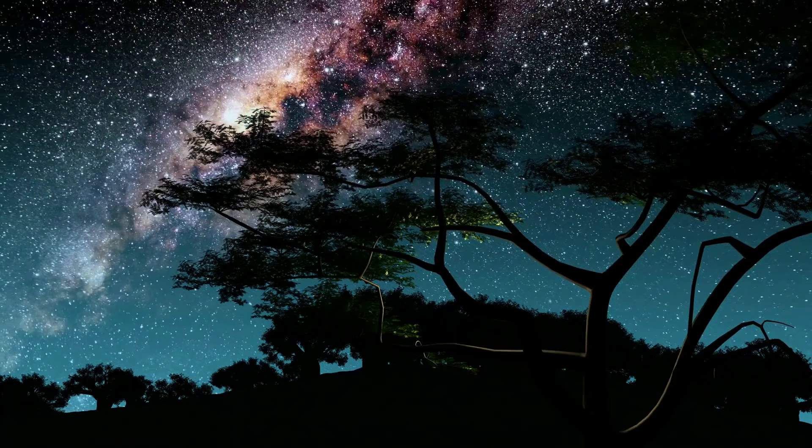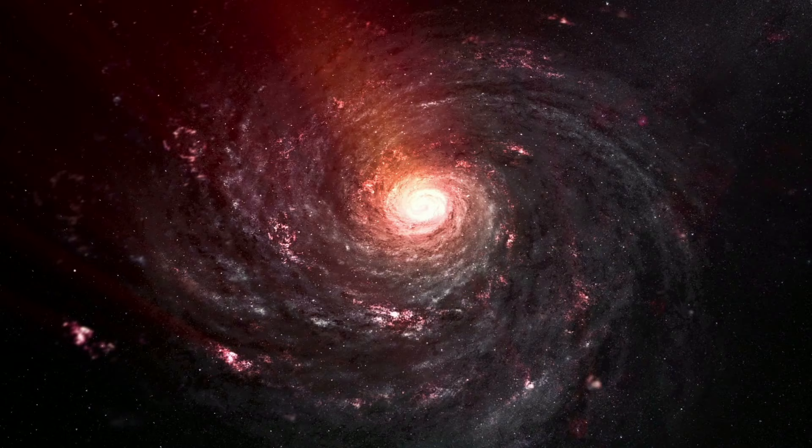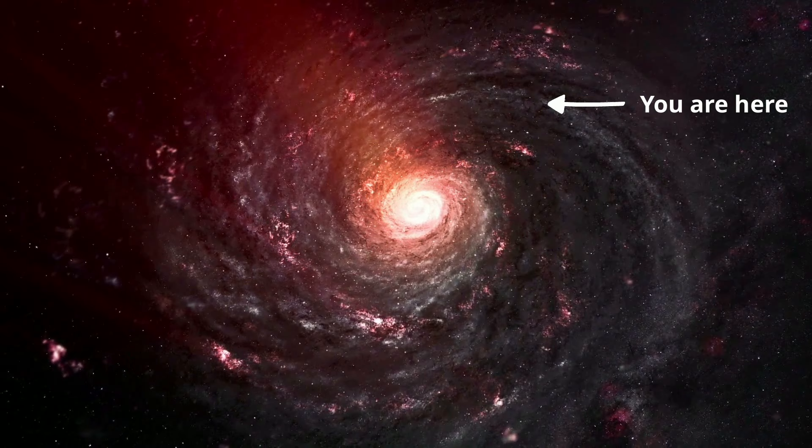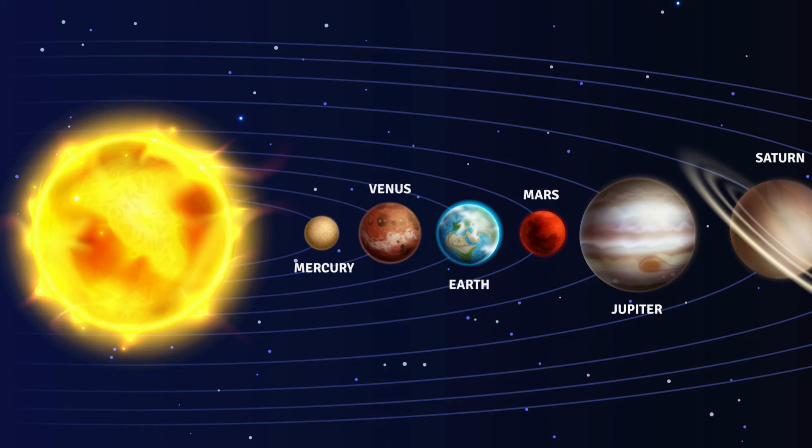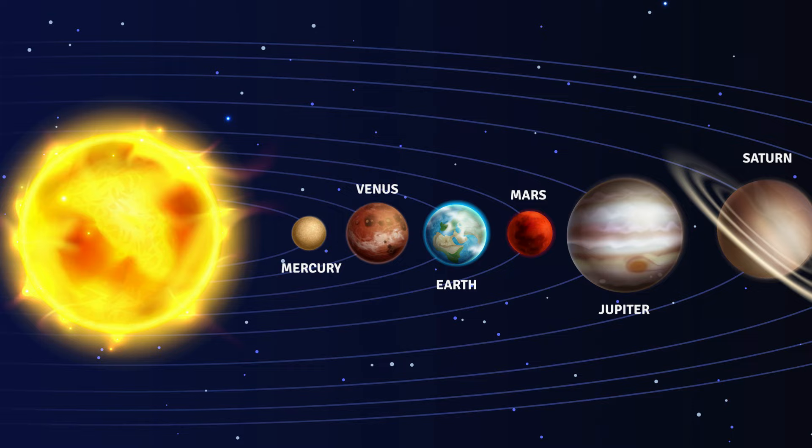Our solar system is located in the Orion arm of the Milky Way galaxy. It consists of the sun and the objects that orbit it, either directly or indirectly. This includes several objects. First, the planets.